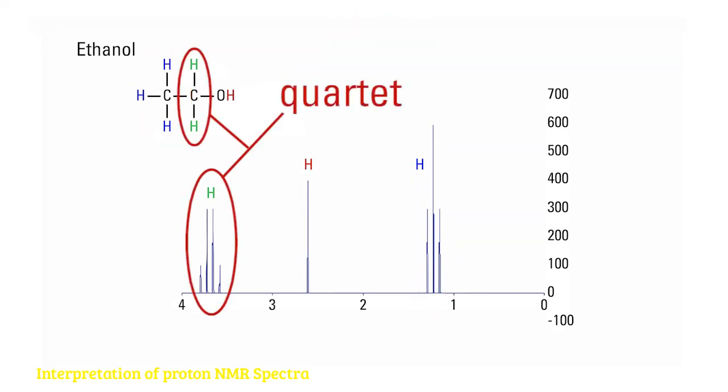And a quartet around 3.7 ppm. This corresponds to the methylene hydrogens. And the signal is split into a quartet by the neighboring three hydrogens in the methyl group.